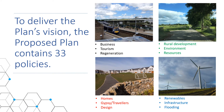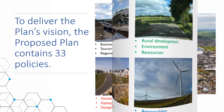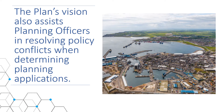To deliver the plan's vision, the proposed plan contains 33 policies on a range of topics, including business, rural development, homes and renewables. However, where conflict arises between these policies, the proposed plan's vision should be used to resolve these policy conflicts rather than applying one policy at the expense of another.